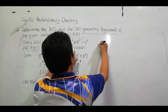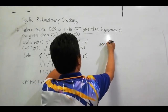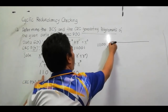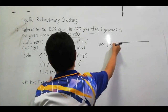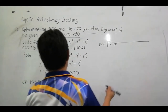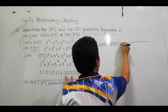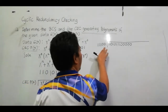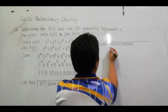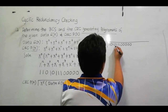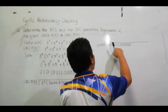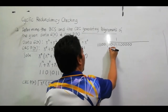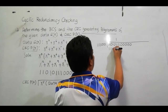Our divisor is 1 1 1 0 0 1, a 6-bit data string. The dividend is 1 1 0 1 0 1 1 1 0 0 0 0 0. We start at the most significant position: 1 times our divisor gives 1 1 1 0 0 1. We then perform XOR on the first 6 bits of the dividend against the divisor.